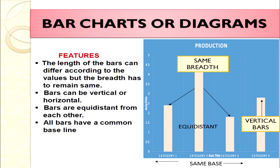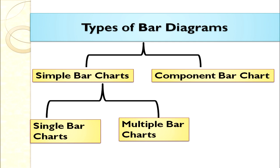The key features of bar charts are: first, the length of the bars can differ according to the values, but the breadth remains the same for all bars. Second, these bars can be vertical or horizontal, though vertical is more popular. Third, bars are equidistant from each other — the distance between the bars is equal. Fourth, all bars have a common baseline.